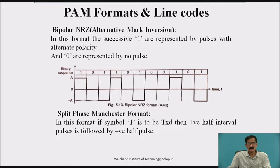Bipolar NRZ, also called Alternative Mark Inversion (AMI). In this format, the successive ones are represented by pulses with alternate polarity, and zeros are represented by no pulse. This is the waveform for the signal 10110100101. Consecutive ones are replaced by either plus A and next one is minus A, where the zero symbol is represented by 0 volts.